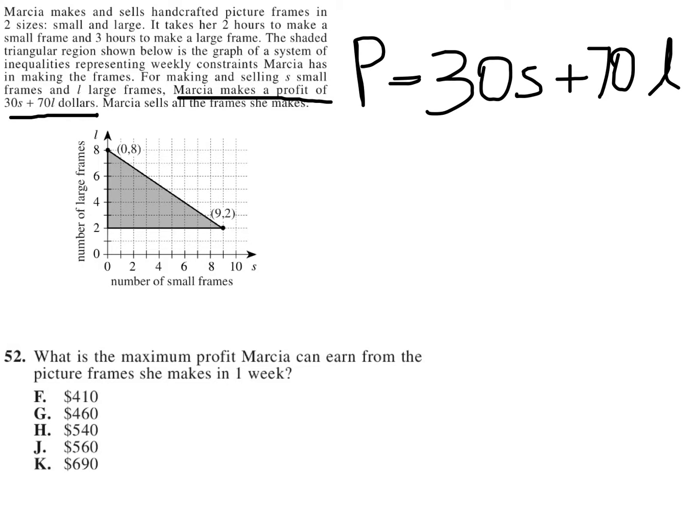Marcia makes a profit of 30S plus 70L dollars. So obviously, looking at this formula, the more large frames she makes, the more money she makes, right?